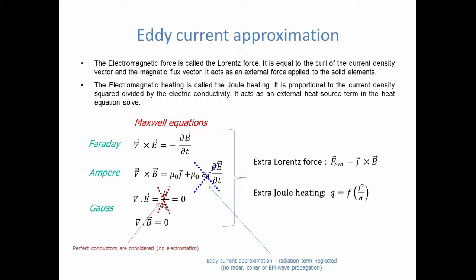The electromagnetic heating on the other hand is called the Joule heating. It is proportional to the current density squared and then divided by the electric conductivity. It acts as an external heat source term in the heat equation solver.